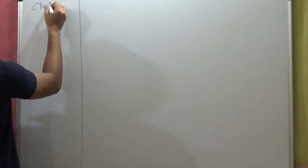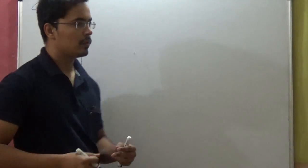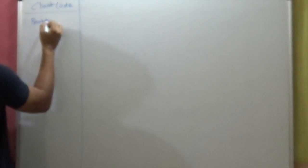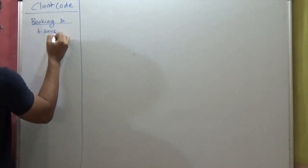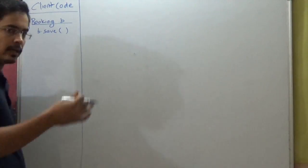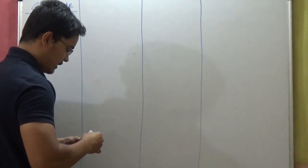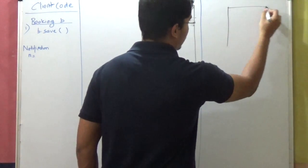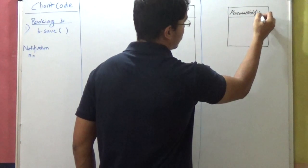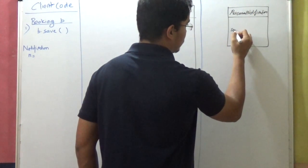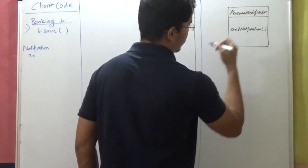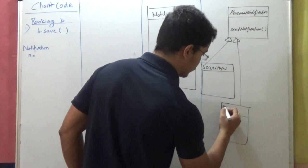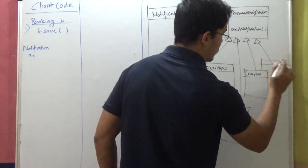This is my client code — the place where we are going to need to send the notification. It will usually happen after we create a booking object of some kind, and we say b.save. Now we need to send notifications regarding this booking. My notification class is going to be a composition. Prior to that, I'll write my lowest level object — I have an abstract class called PersonalNotification. It will have a method called sendNotification. This is the abstract method. I am deriving four concrete classes from this: SecurityNotification, MemberNotification, CoachNotification, and ManagerNotification.